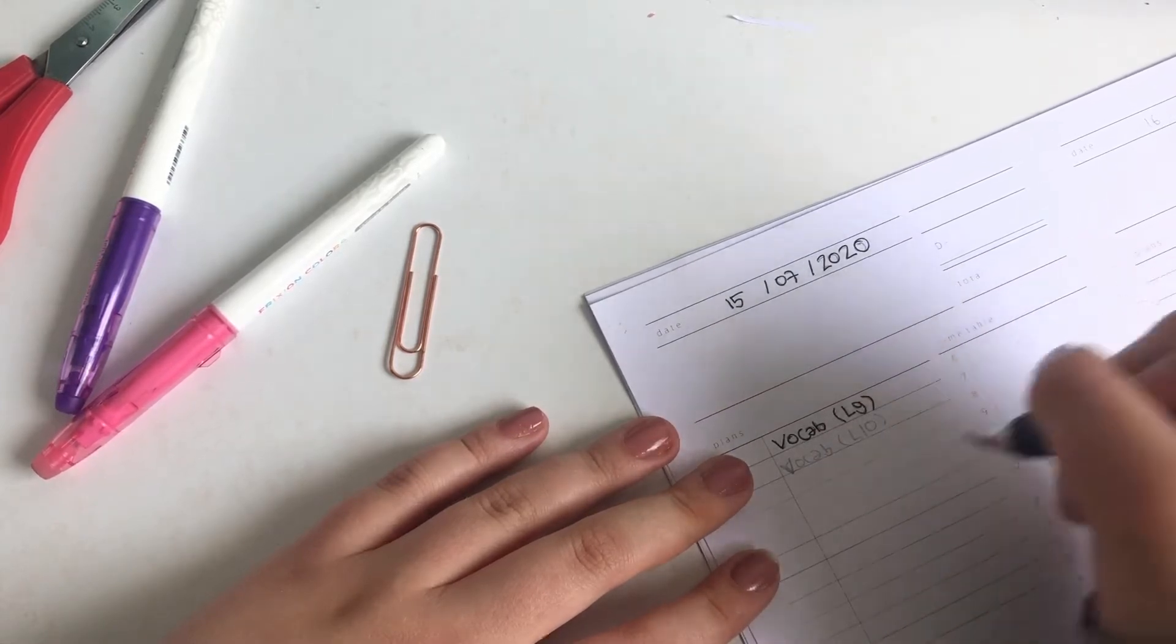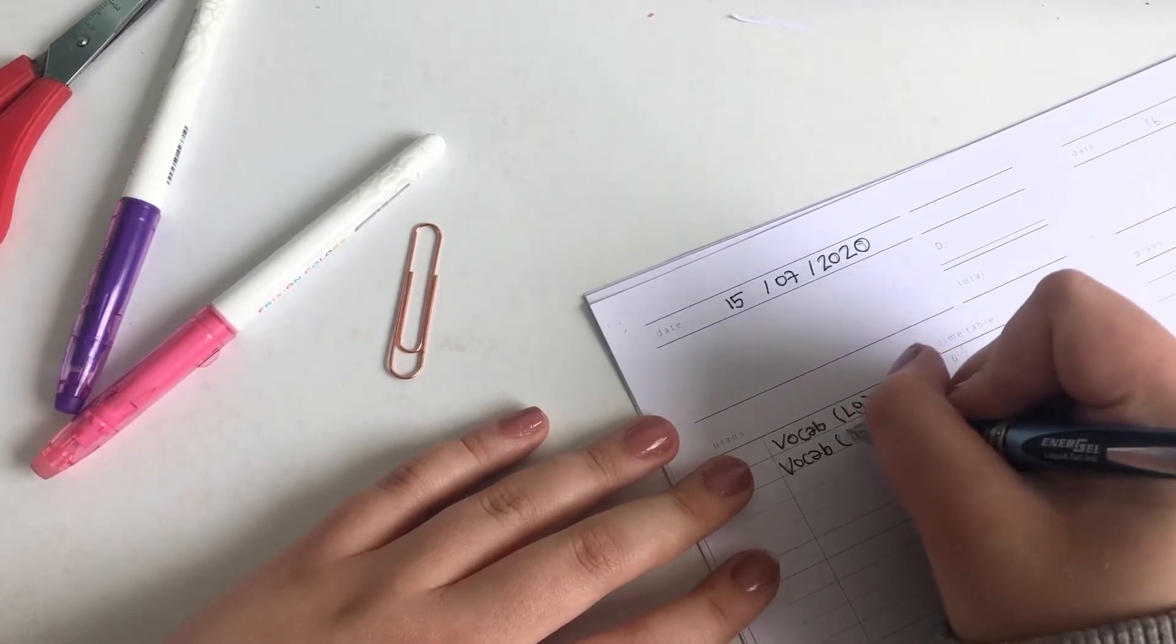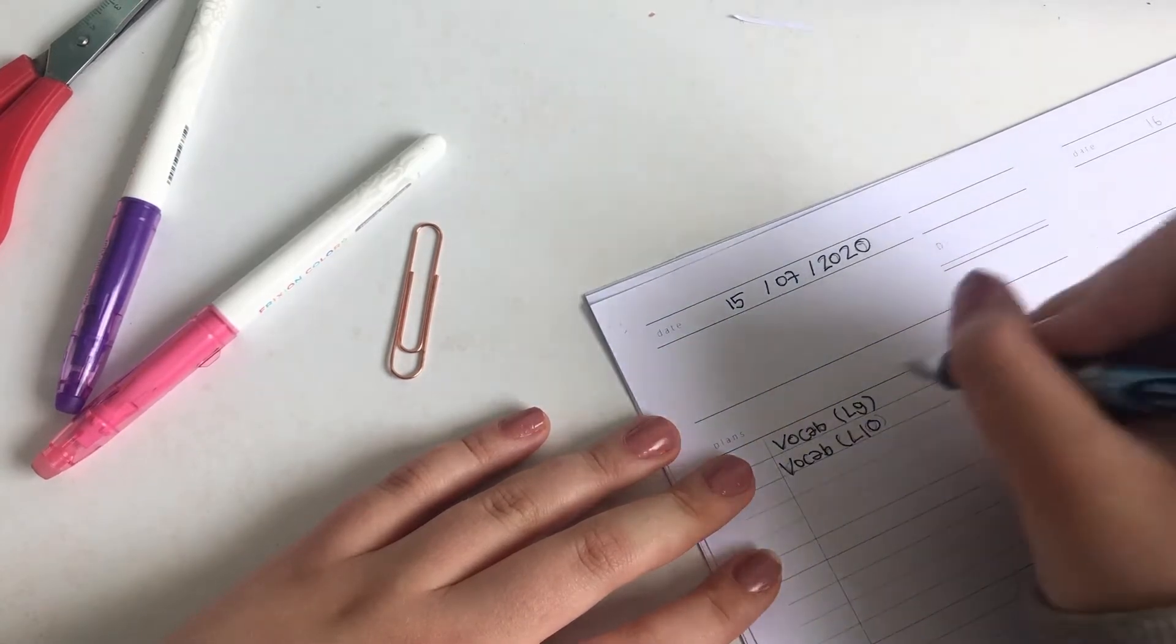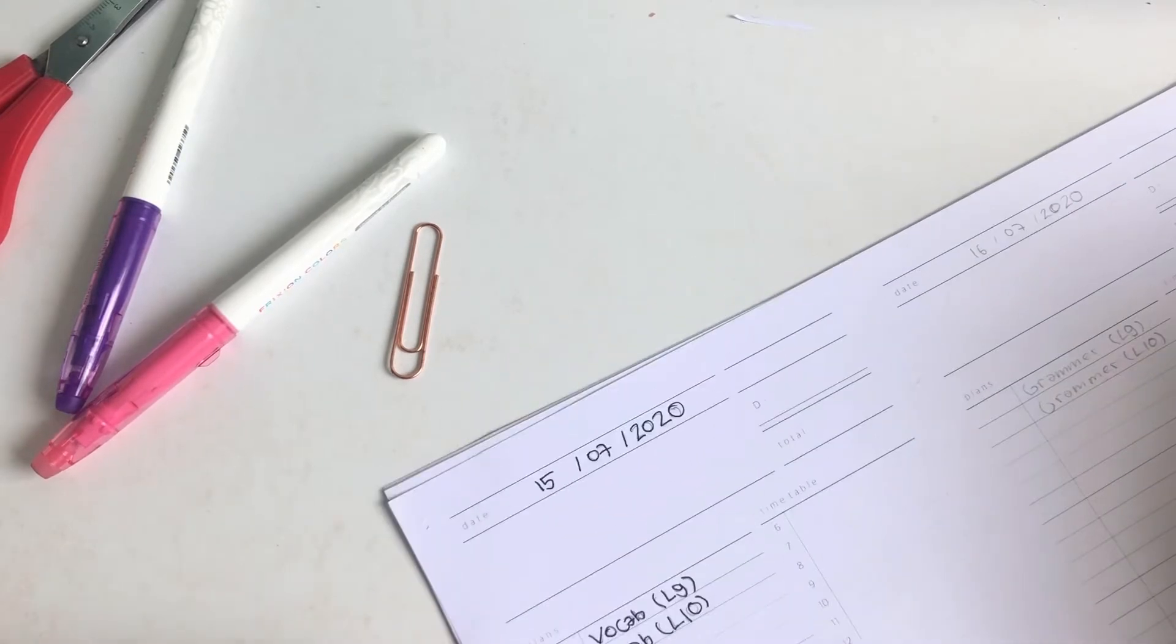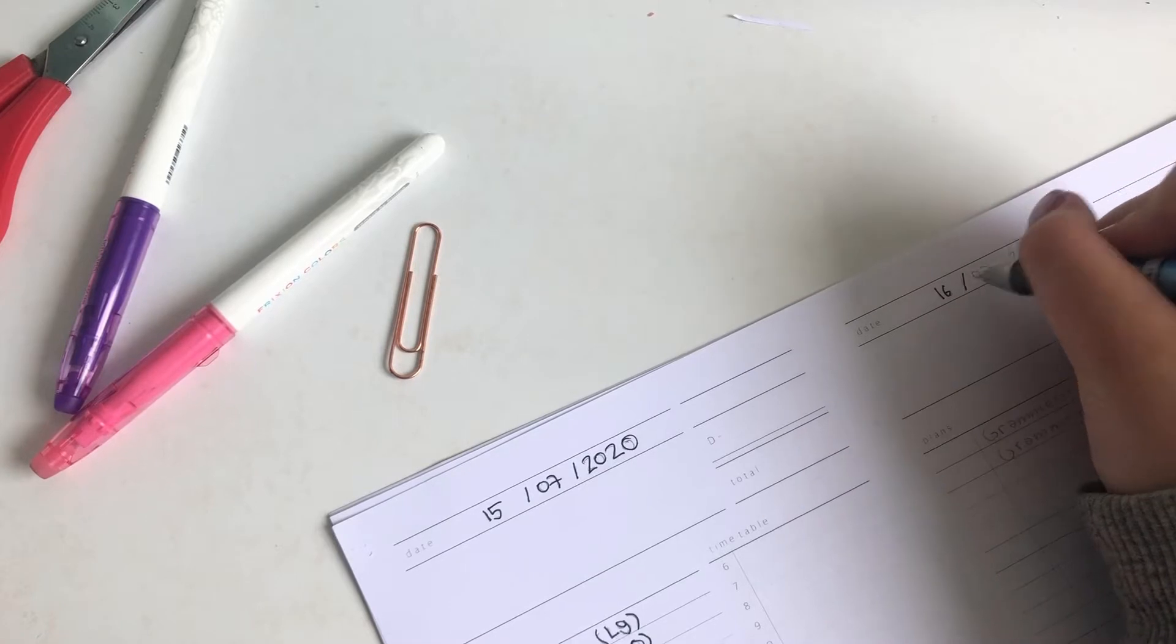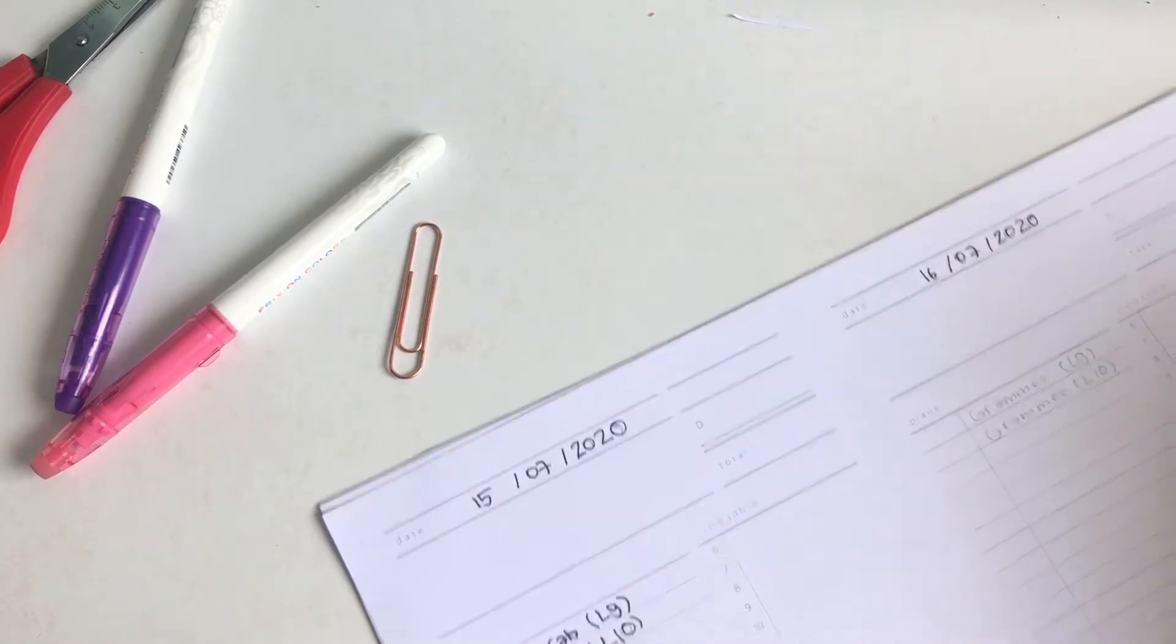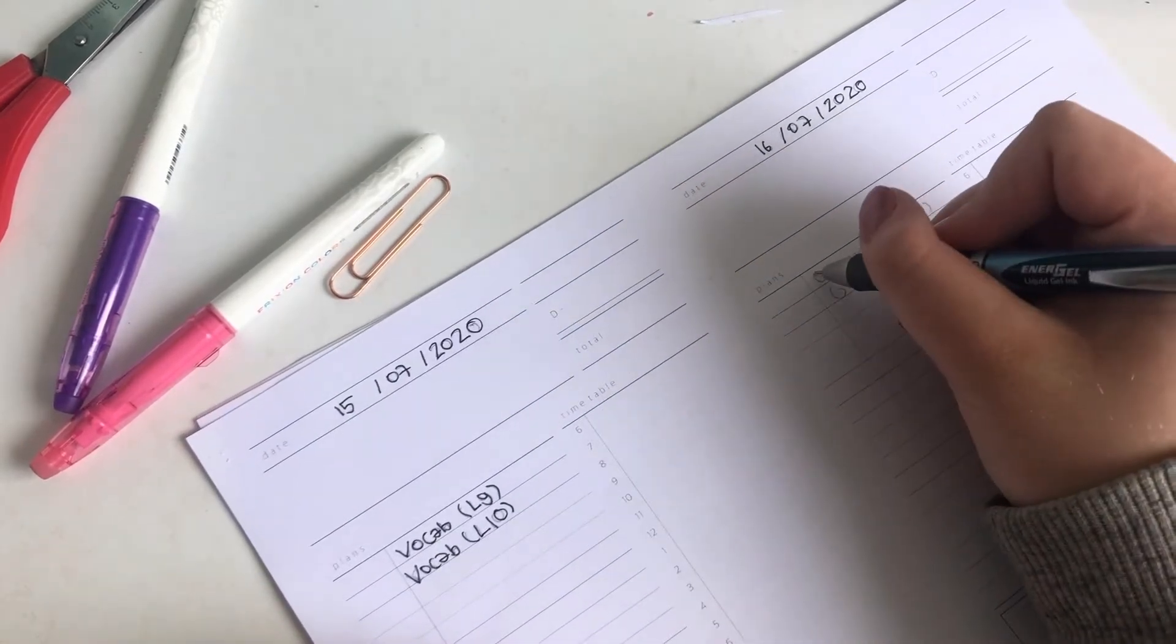This printable I found on Naver which is the Korean Google, and some bloggers they post cute printables for free. So at first I'm writing down the dates and what I want to study this day. For example the vocabulary and the following day the grammar from the same lesson in my book.